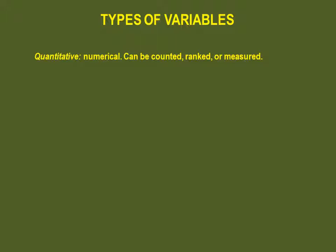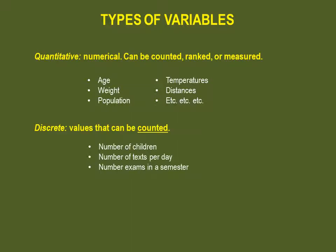There are two types of variables that can be used to compute statistics. The first type is the quantitative variable — as the name says, it refers to anything that relates to quantity. These are by default numerical and can be counted, ranked, or measured. We can split these into two categories. The first category is discrete variables: values that can be counted, such as the number of children, number of texts per day, and the number of exams you may have in a semester.